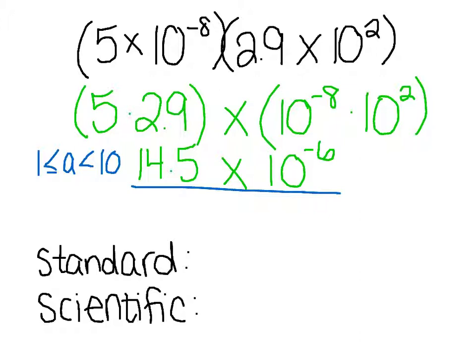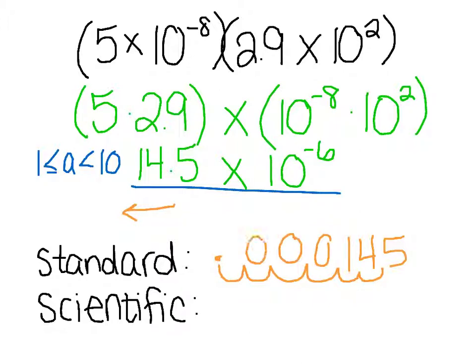So we have 14.5 times 10 to the negative 6. That means our decimal spot is moving to the left 6 spots. So if I have my decimal here, I'm going to go 1, 2, 3, 4, 5, 6. This is where my new decimal spot is, and I'm going to fill in my holes with zeros. So my number in standard notation is 0.0000145.